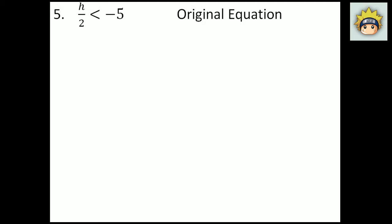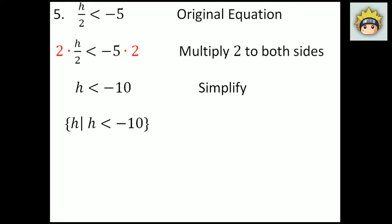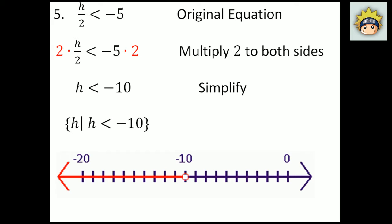Number 5. The original equation is h divided by 2 is less than negative 5. I have to multiply by 2 to both sides. This is a positive value, so I do not have to flip the inequality. What I have left on the left-hand side is h. On the right-hand side, negative 5 times 2 is negative 10. So h is less than negative 10. In set builder notation: h, h is less than negative 10. It is an open dot on negative 10 going all the way to the left — so negative 11, negative 12 and so forth would make this valid.